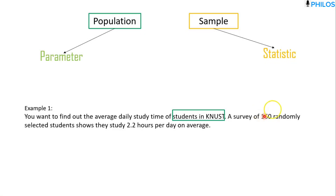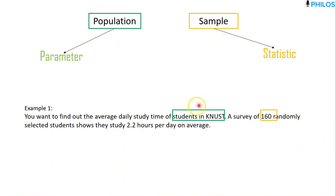But they said a survey of 160 randomly selected students. When you conduct a survey, you select some part of the population. So this part of the population — which is the 160 students — is a sample, whereas all students in KNUST is the population, the group of interest, and the group from which the sample was selected.